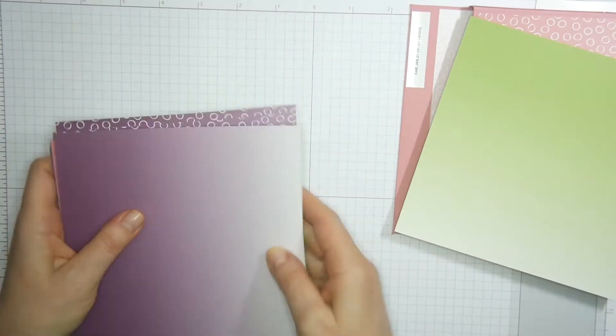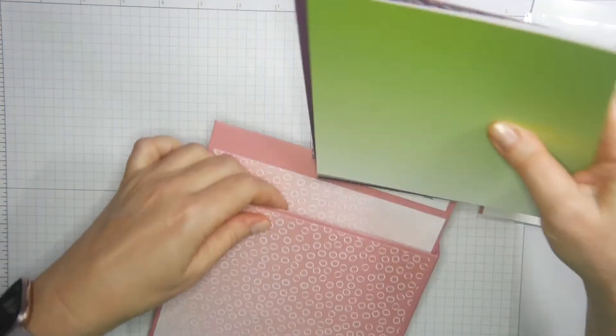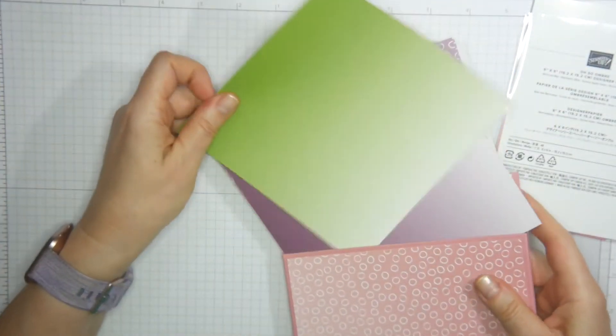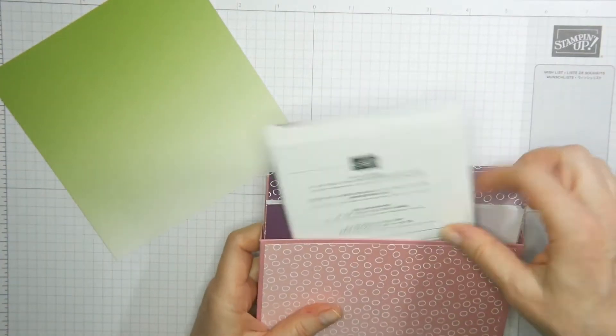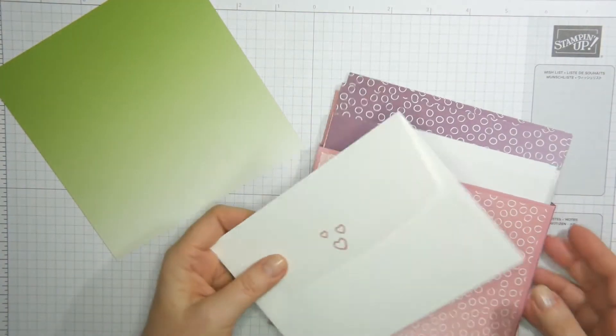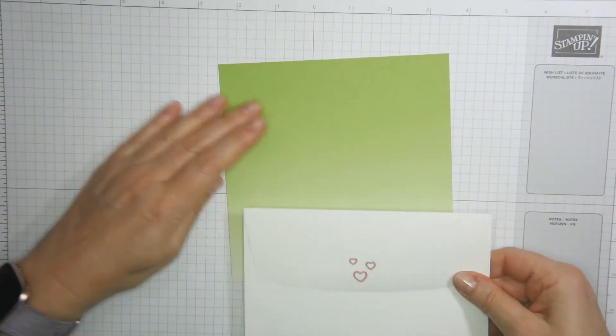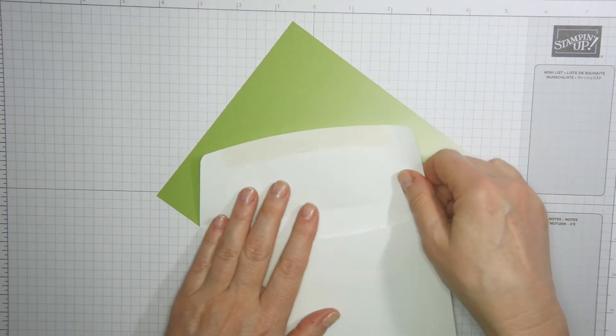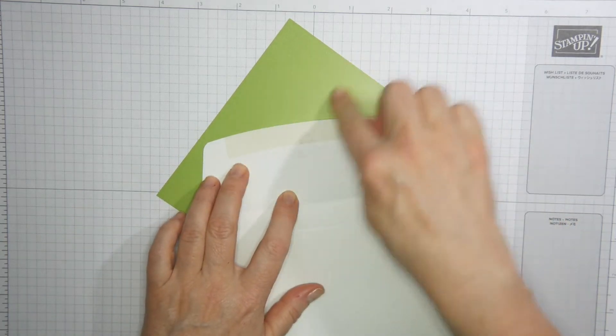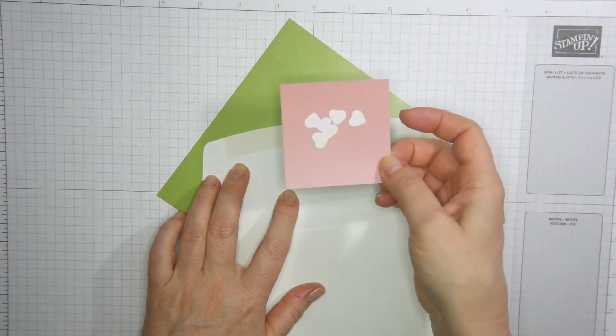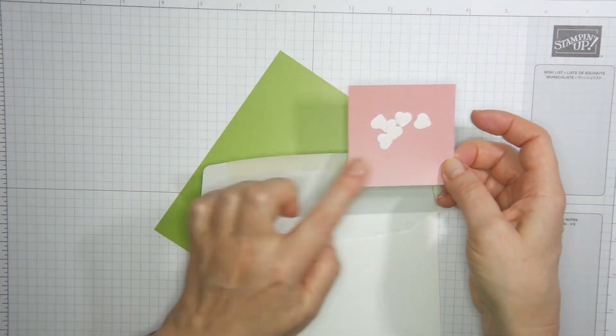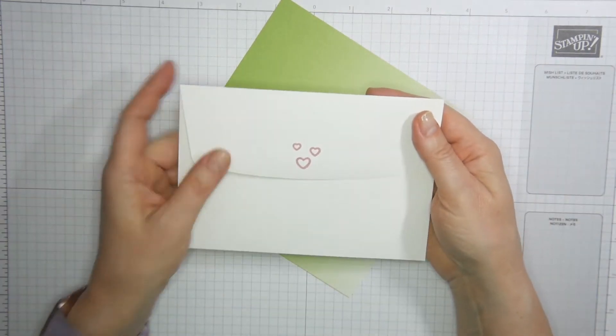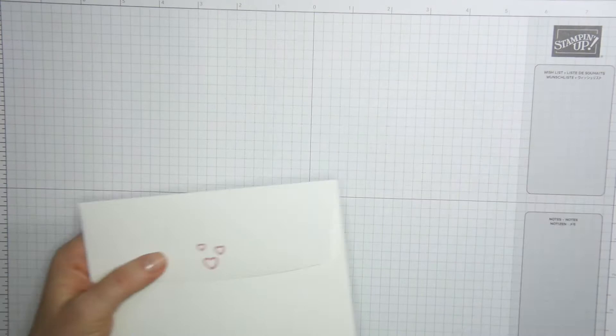I'll show you if you wish to decorate the flap of an envelope. You see, the envelope is too wide. You'll have to spend another piece of paper on it. So it's up to you. With this envelope, I just decorated the back with the little hearts, which I think is cute as well.